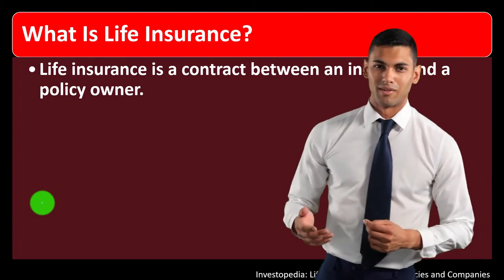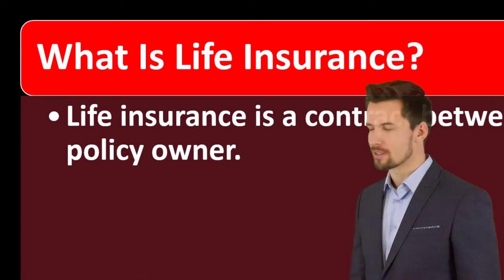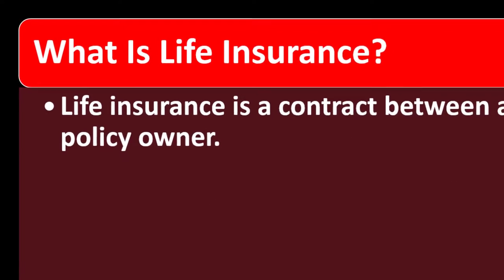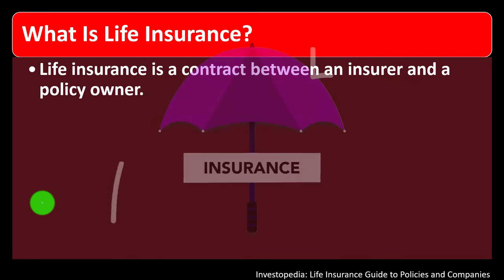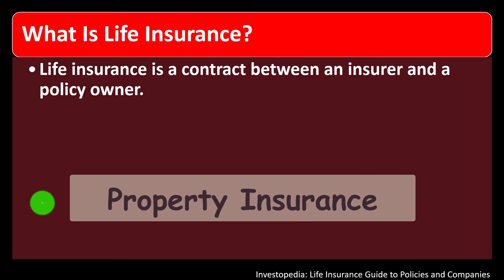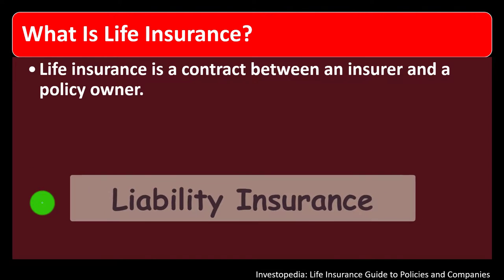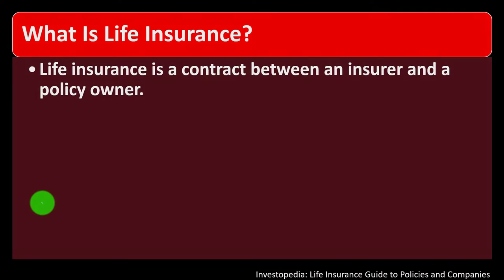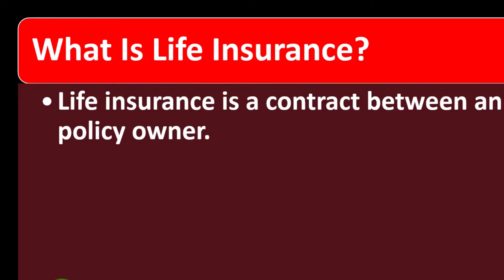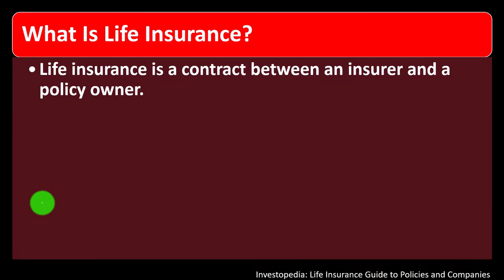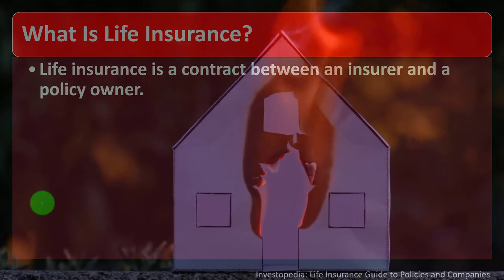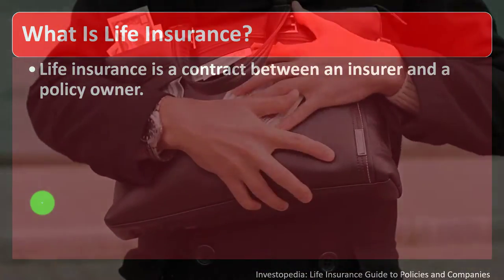In prior presentations, we've been taking a look at insurance in general. Now we're looking at life insurance in conjunction with that discussion. Life insurance can be thought of as more classical insurance in some ways. If you think about property insurance or liability insurance, you're typically safeguarding against something you hope doesn't happen.